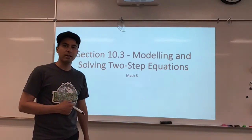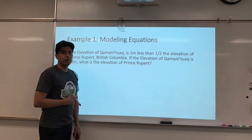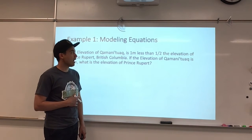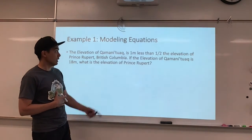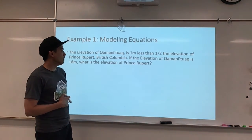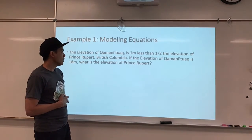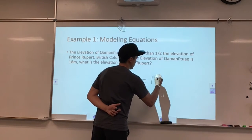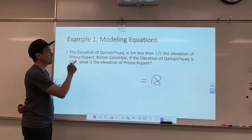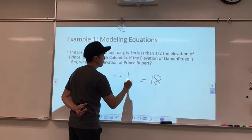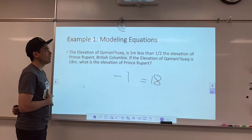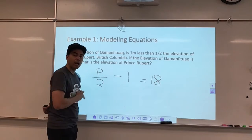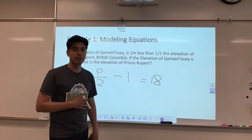As a quick intro problem: if the elevation of Quamanituck is one meter less than half the elevation of Prince Rupert, British Columbia — if the elevation of Quamanituck is 18, what's the elevation of Prince Rupert? The elevation of Quamanituck equals one meter less than half the elevation of Prince Rupert. So if I took the elevation of Prince Rupert, divided it in two, and went one less than that, I'd get the same number as 18.